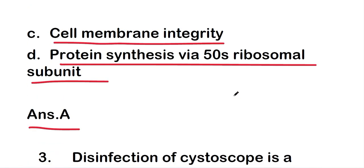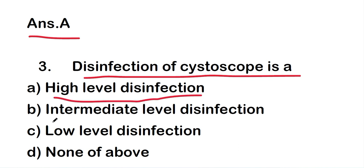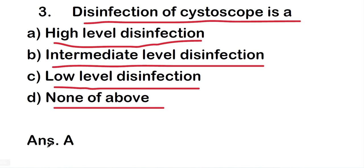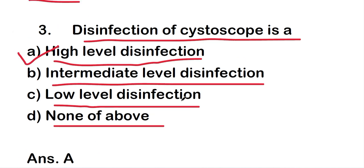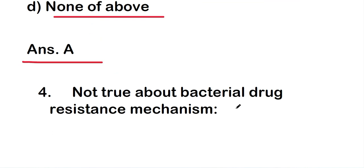The next question: disinfection of cystoscope is high level disinfection, intermediate level disinfection, low level disinfection, or none of the above. The right answer is option A — high level disinfection. So disinfection of cystoscope is a high level disinfection.